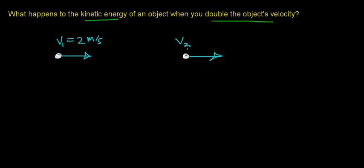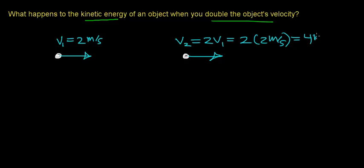So in this case, we'll call this V2 — the velocity of the object when you double its velocity. And that's 2 times the initial velocity, which in this case would work out to be 2 times 2 meters per second, or 4 meters per second.